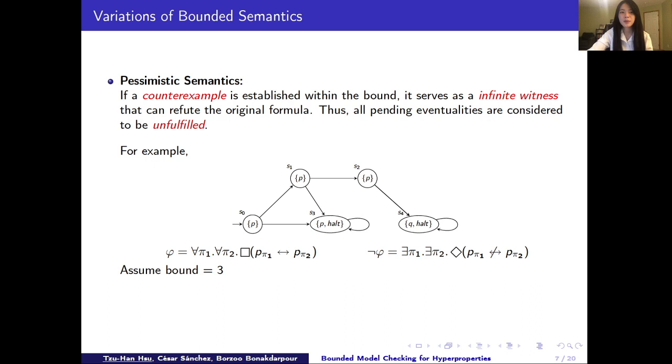Then start from S0, we will explore all pair of traces that has length at most 3. Take this blue and green pair as an example. If we evaluate them simultaneously, we can see that because this pair has different values of p on the third step. So it is a counter example that fulfills NOT phi.